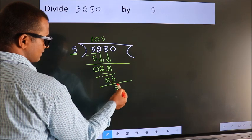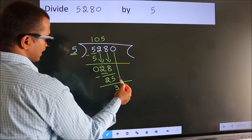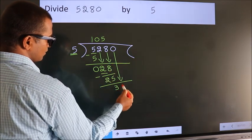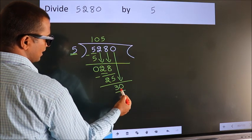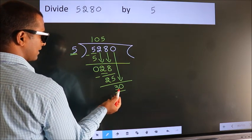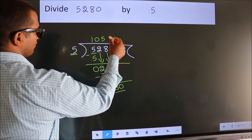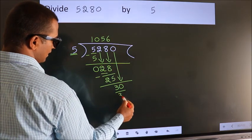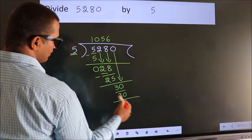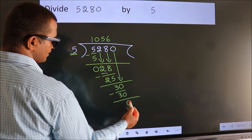After this, bring down the beside number. So 0 down. So 30. When do we get 30? In the 5 table. 5 times 6 is 30. Now we subtract. We get 0.